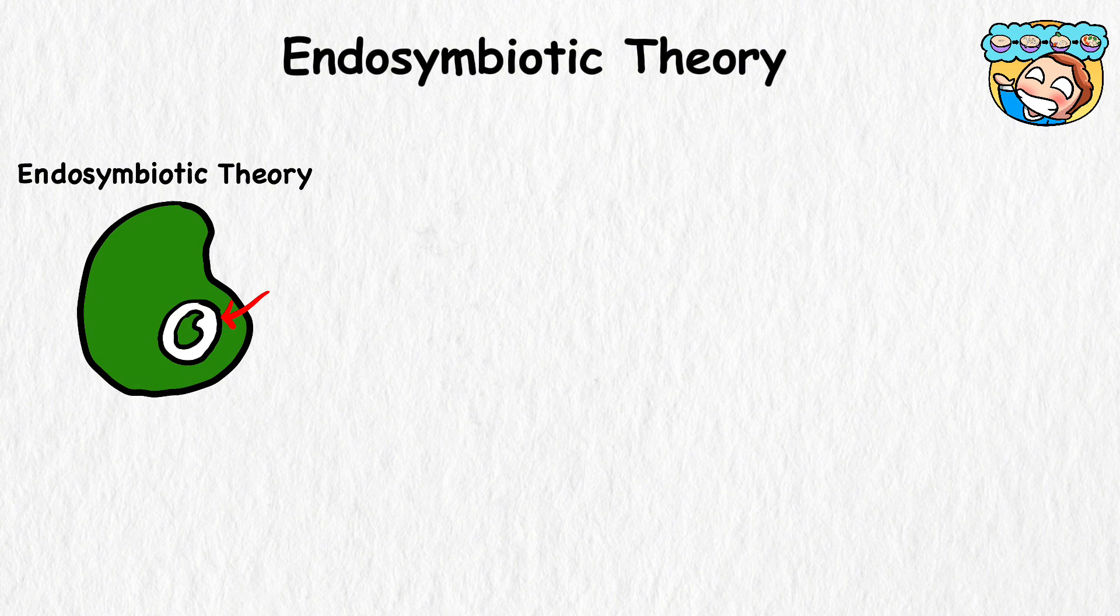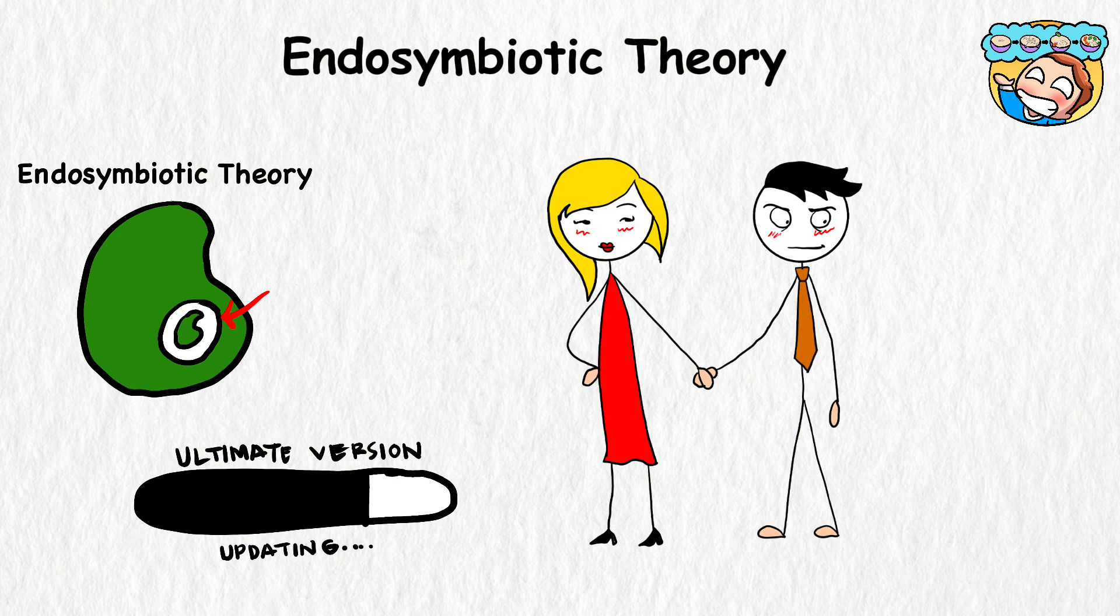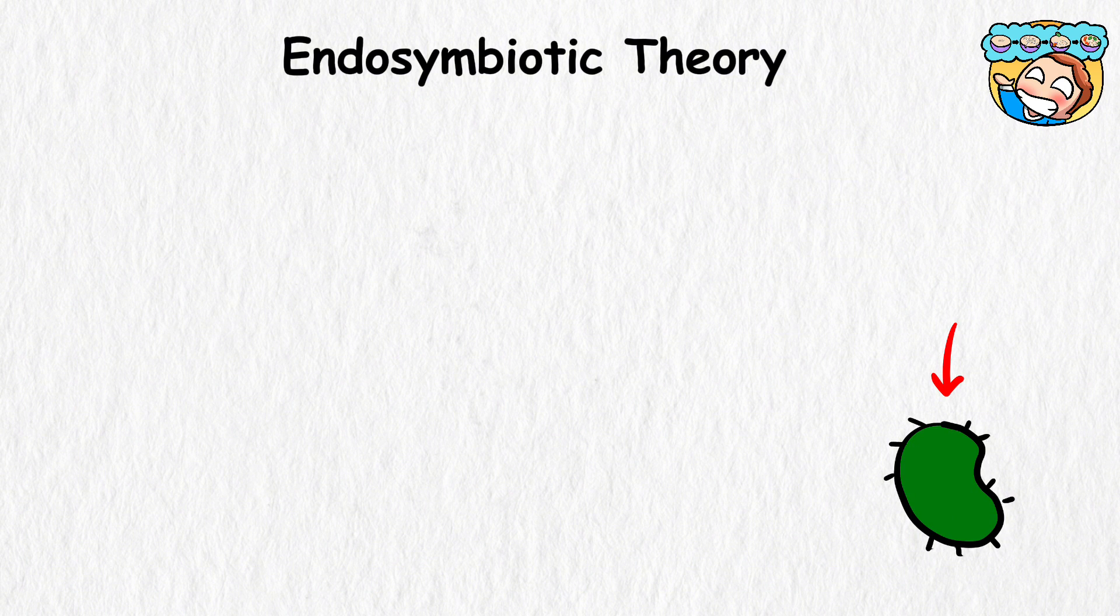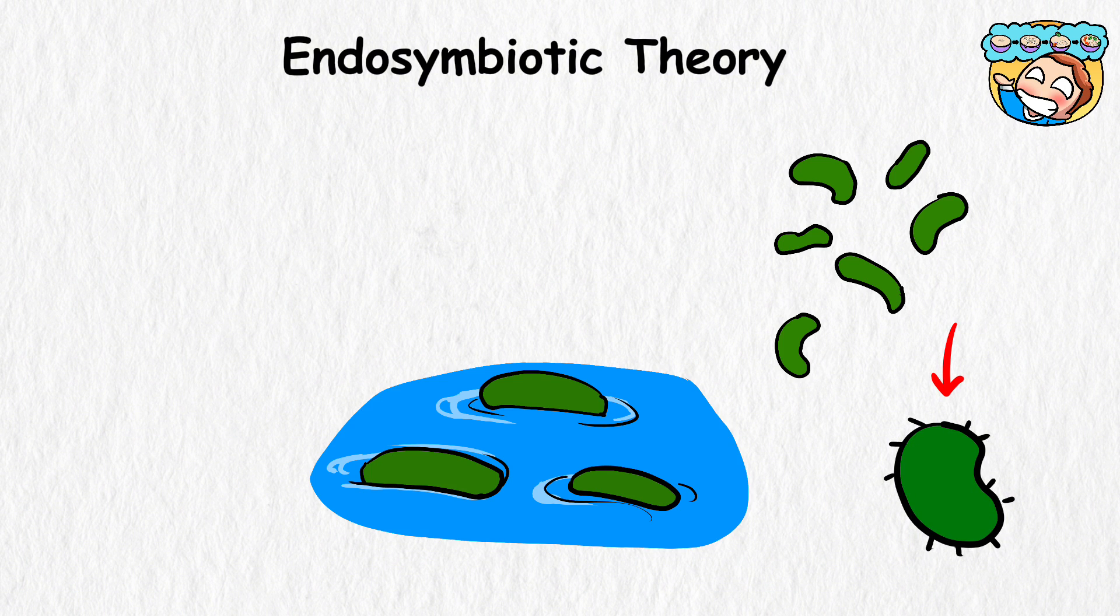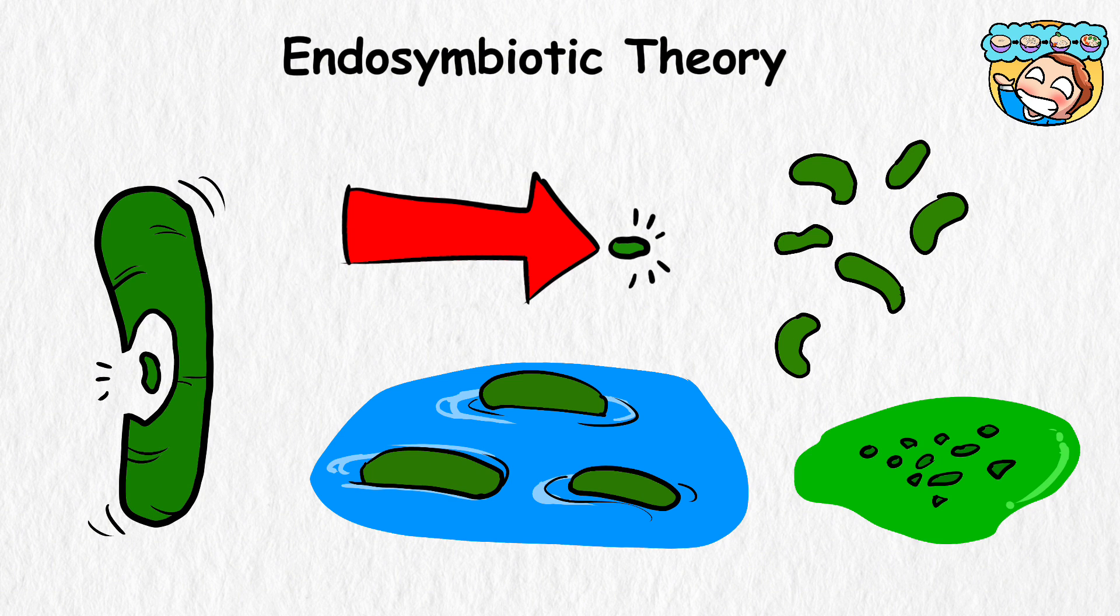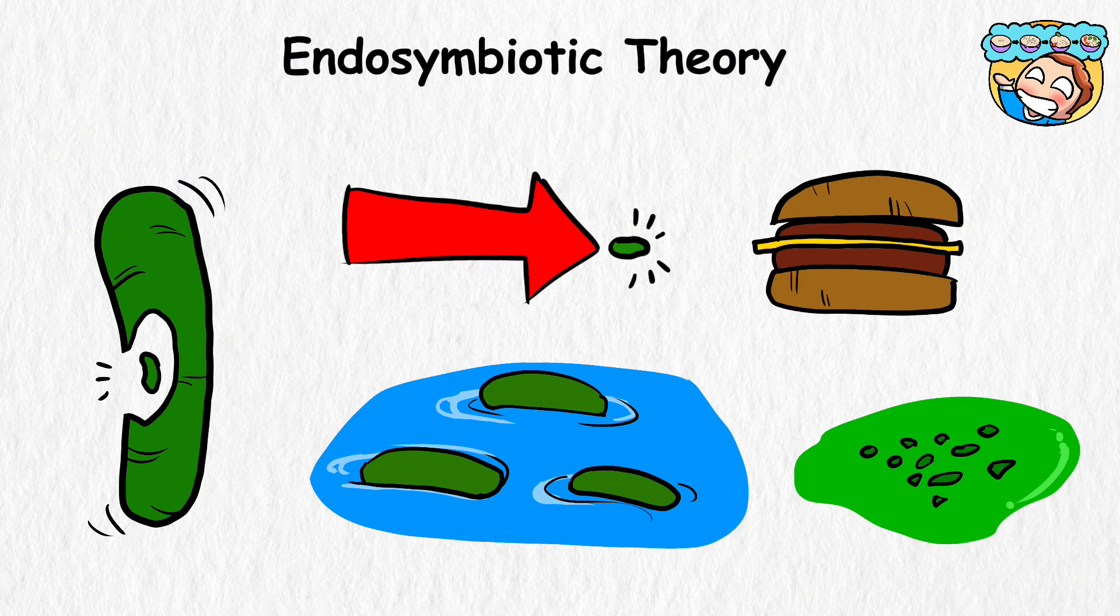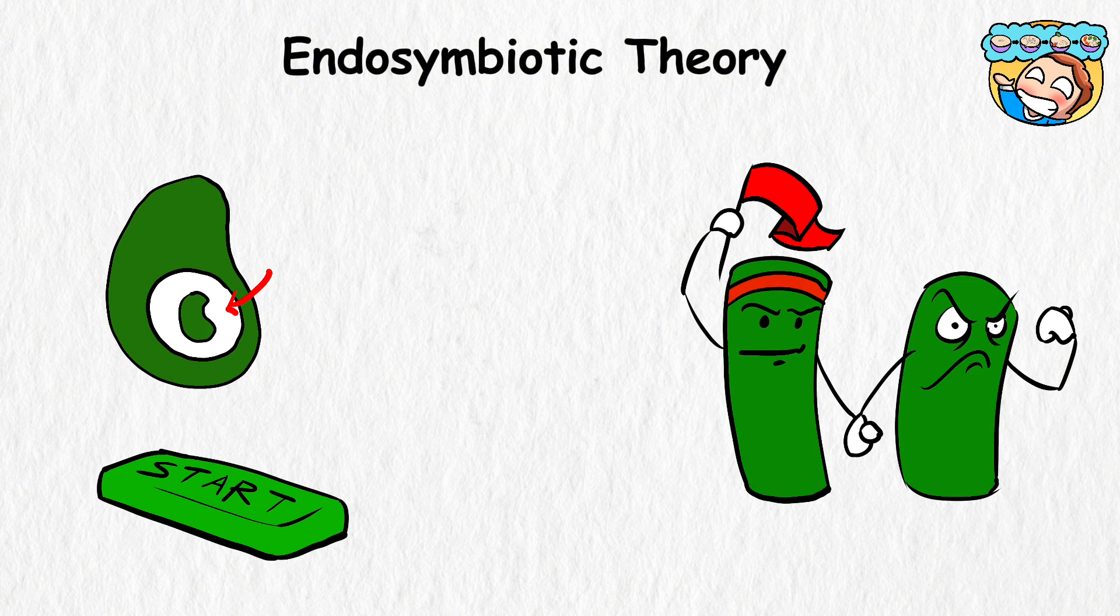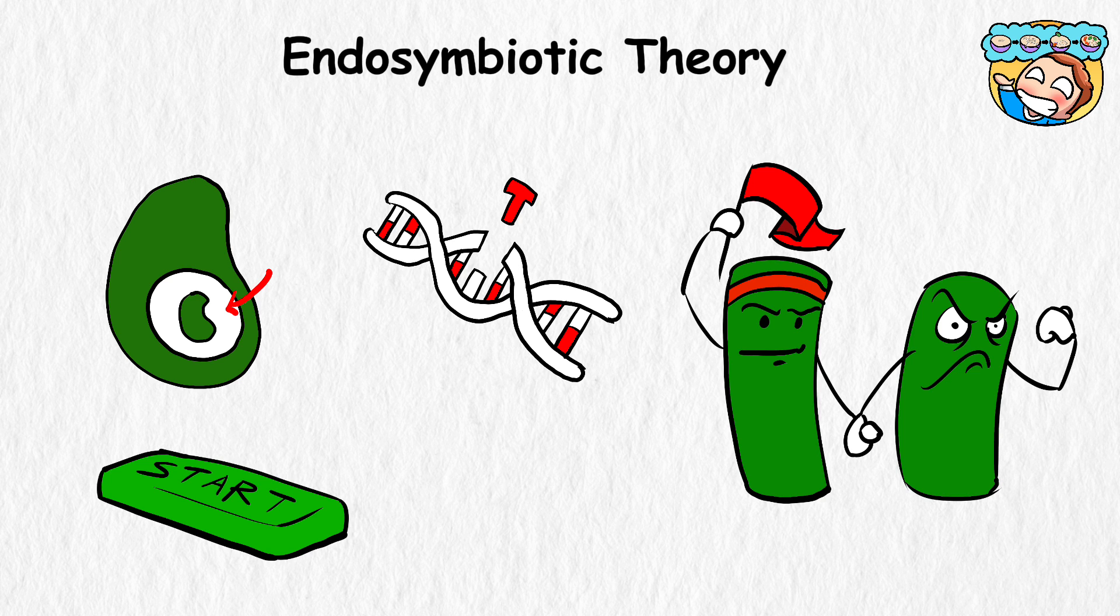Endosymbiotic Theory. The endosymbiotic theory is like the ultimate version of an awkward first date. Imagine the earth billions of years ago, when the only organisms were single-celled entities floating like blobs. Then, one tiny cell decided to get up close and personal with another, invading its personal space. But instead of digesting the other cell as food, which usually happens, they started living together, one inside the other.